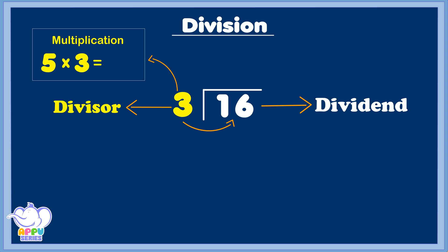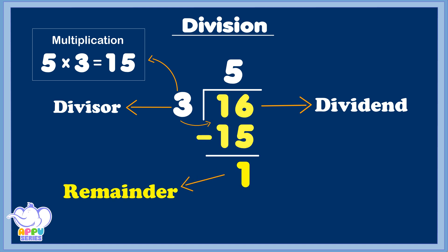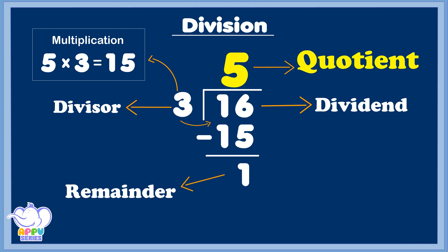Multiply! 5 times 3 is 15, so multiply. Subtract! Subtract 15 from 16 — now guess what's left to be seen? 1 is the remainder that's left. 5 is the quotient that you get.